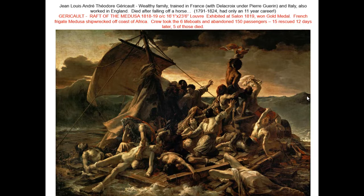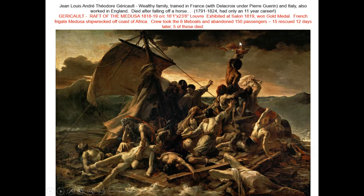The ship was managed by a man who had not been a captain on the water in a couple of decades — he had a political post. He ran the ship aground on a sandbar, wrecked it, and the main leaders of the crew took off with the few lifeboats, leaving 150 passengers to die. They had to create a raft out of bits of the ship that were left. People were injured; people didn't survive the entire time on the raft. They even resorted in some cases to cannibalism. Fifteen people of this group managed to actually survive and were rescued — and that's what you're seeing in the painting.